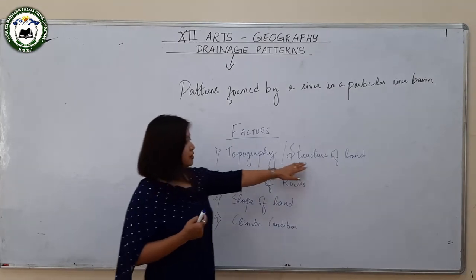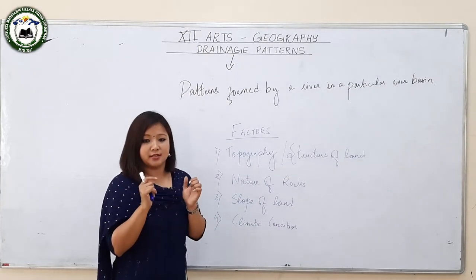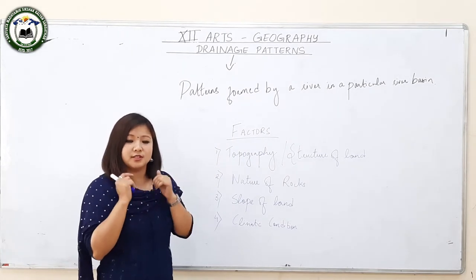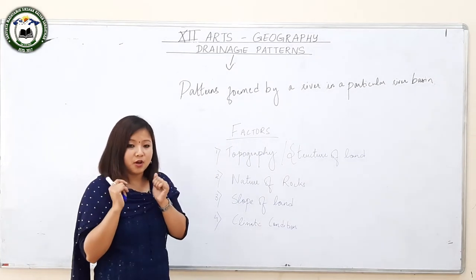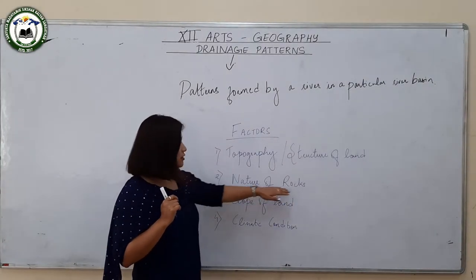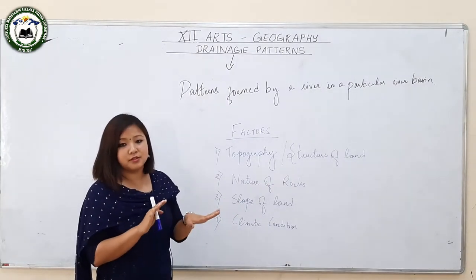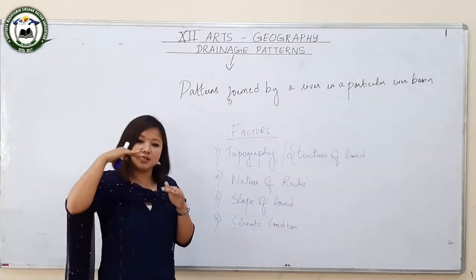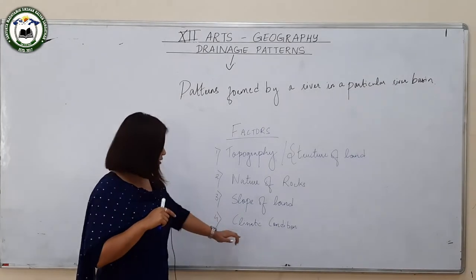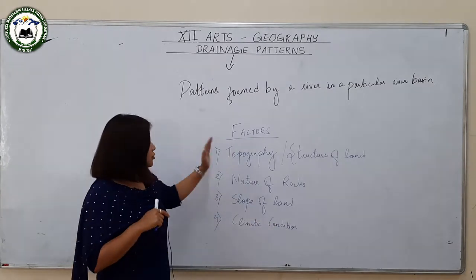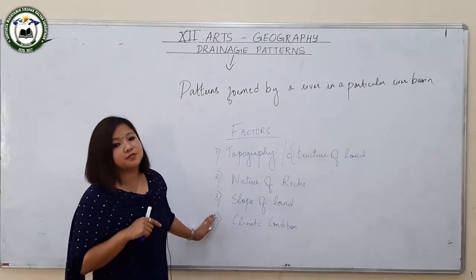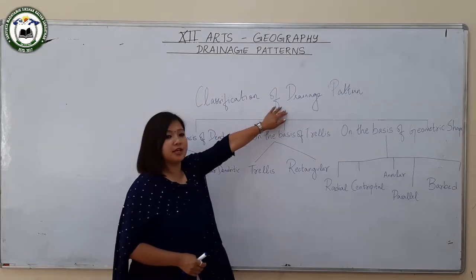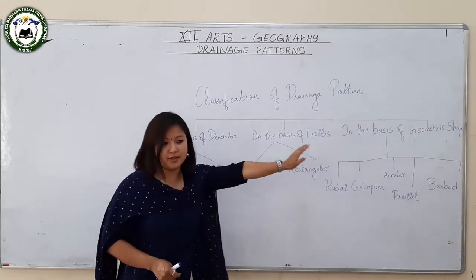Topography or structure of land refers to how landforms are aligned — whether they are uniformly settled or have irregularities such as folded and faulted rock blocks. Nature of rocks refers to composition — whether rocks are hard or soft. Slope of land refers to gradient — whether slopes are steep or gentle. Climatic condition is the fourth factor. Due to these four factors, several types of drainage patterns are classified.